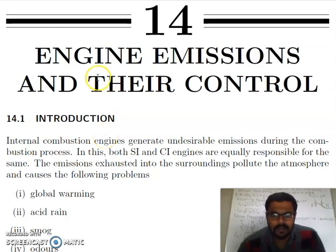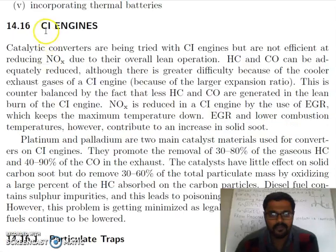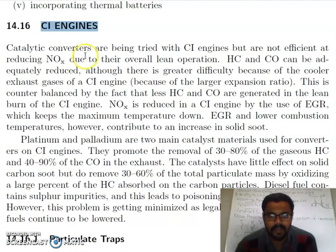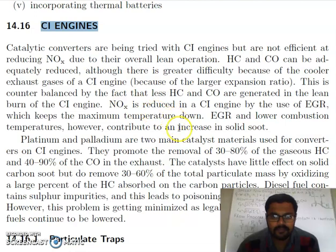Today we will start with the topic of engine emissions and their control. We will start with compression ignition engines — how to control the pollution in a compression engine. You can use either a catalytic converter or exhaust gas recirculation.